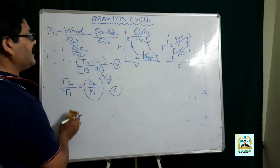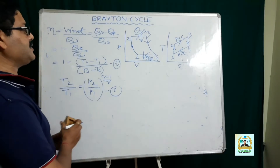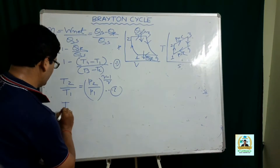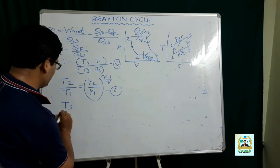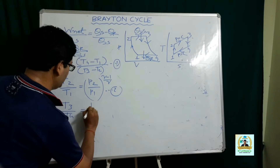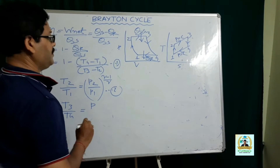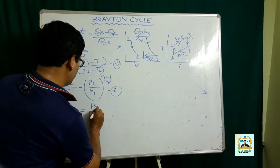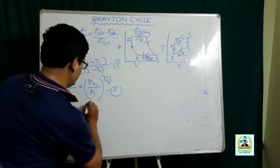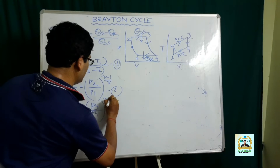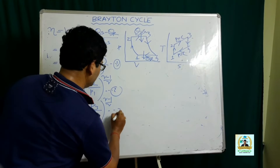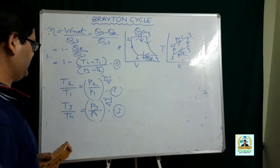For the isentropic process 3-4, T3/T4 = (P3/P4)^((γ−1)/γ). Let this be equation 3.